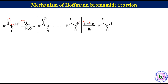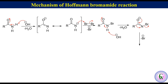The hydroxide ion then abstracts the second N–H proton from the N-bromoamide to produce water and N-bromoamide anion. Delocalization of the negative charge on oxygen, migration of the R group from carbon to nitrogen, and simultaneous elimination of bromide ion produces the isocyanate intermediate.